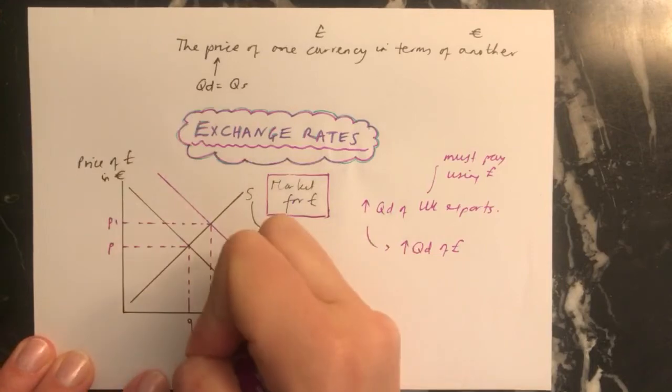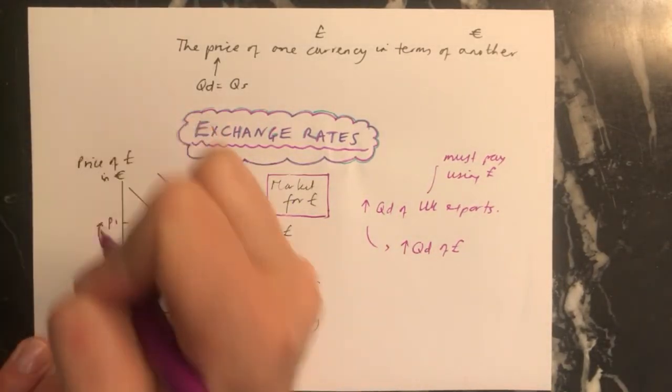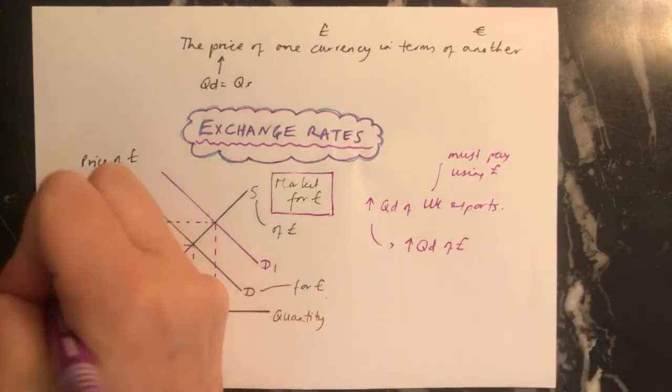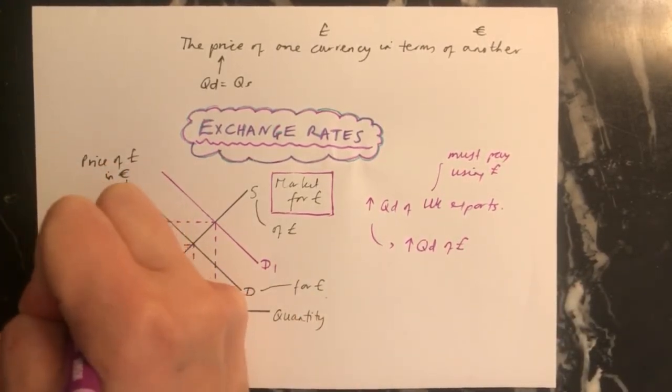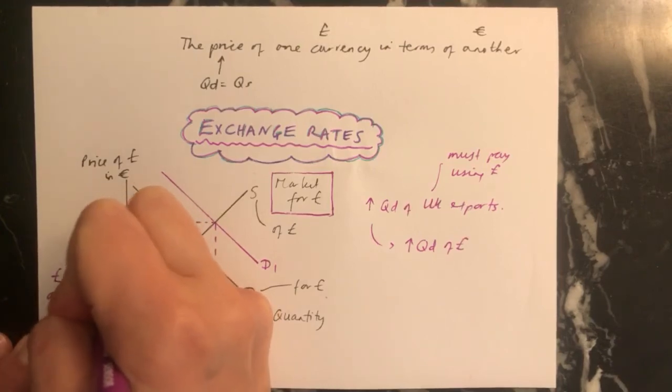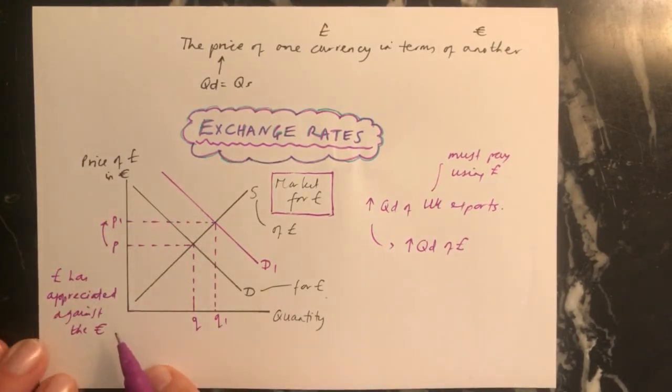So you can see that the price of pounds has gone up from P to P1. And what we'd say there is the pound has appreciated, that means it's worth more, against the euro because a currency only gets stronger or weaker against another currency.